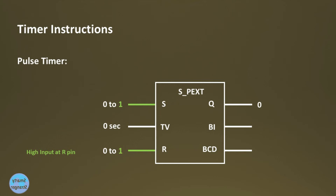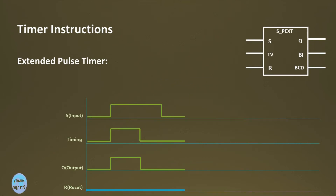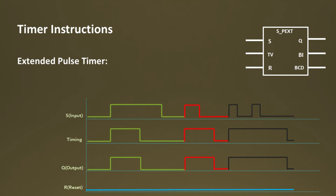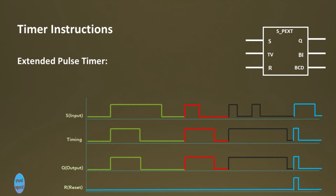Let's understand the Extended Pulse timer via trends view. In the first cycle, if there is a positive edge at S input, the timer starts its timing and output Q gives 1 or high — it remains 1 as long as the timer is running. In the second cycle, if S input changes from 1 to 0 before time elapsed, the timer completes its timing and output Q remains 1. In the third cycle, if there is fluctuation on pin S, the timer remains running and output Q remains 1 until time elapses. In the fourth cycle, if input R changes from 0 to 1 while the timer is running, the current time and output Q are set to 0.